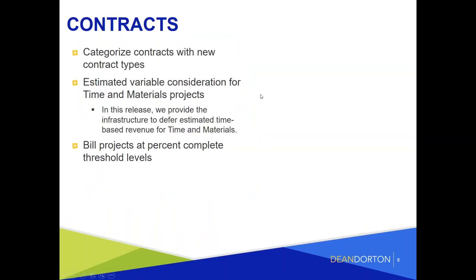Now we're into the major changes section. In contracts, they've added the ability to categorize contracts with new contract types - similar to customer type or vendor type in AR and AP. You can use contract types to build dimension groups and dimension structures and achieve reporting by contract type. The next big one is estimated variable consideration for time-and-expense projects, which is a big deal for ASC 606. This gives you the capability to estimate variable consideration for time-and-material projects, exactly what ASC 606 requires in order to recognize revenue properly on those projects.